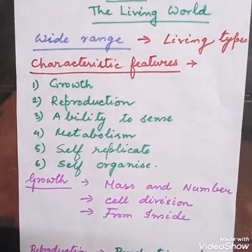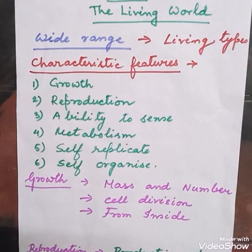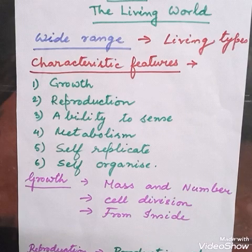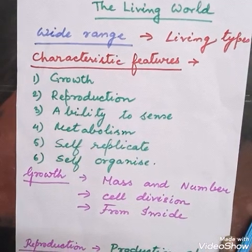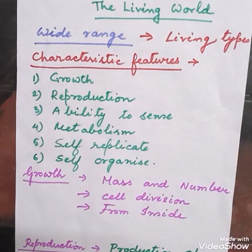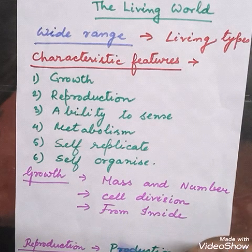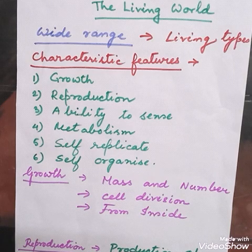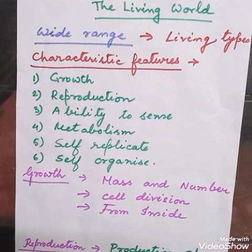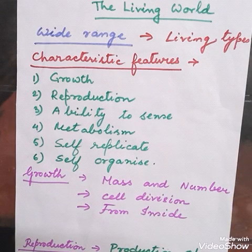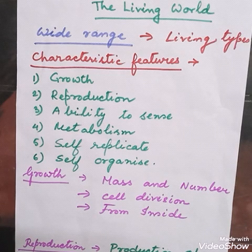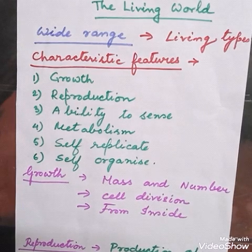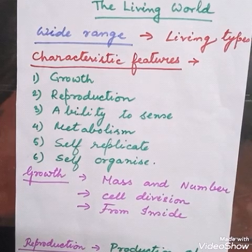So first of all we will discuss the characteristic features of the living organism. Number one is growth. Second is reproduction — that is the ability to produce the young ones. Third is ability to sense — the ability to sense what is in the surrounding, whether you are touching a hot object or there is danger. That ability to feel or sense is also one characteristic feature. And metabolism — the body's reactions are called metabolism. Number five is self-replicate, organisms can increase their own number, and they can also self-organize — organisms can stay in an organized manner. These are the common characteristic features of living organisms.